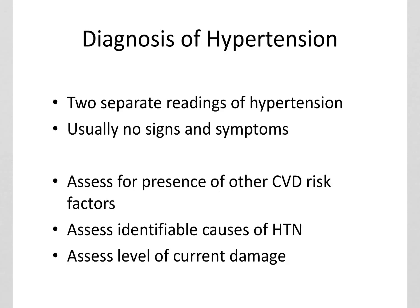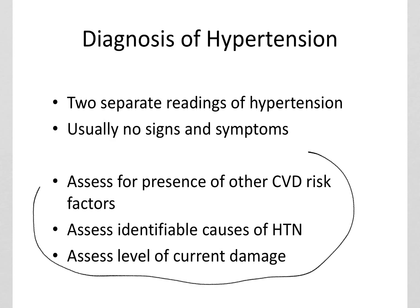When someone has hypertension, you're assessing the blood pressure but also looking at the other risk factors going on. Are they also diabetic? Do they have issues with inactivity or obesity? And then what's the current level of damage — is there damage already done to the heart and the vessels, and what can be done to stop future damage?